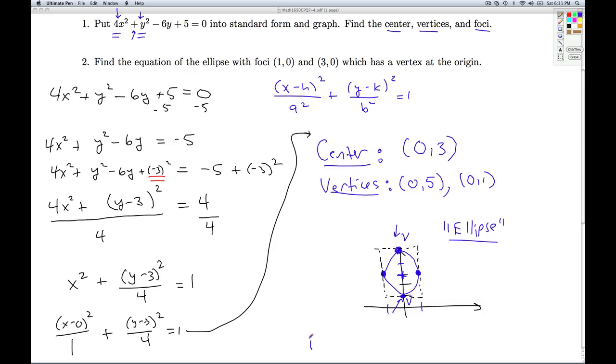What about the foci? Well, for ellipses as well as hyperbolas, the c is the key. You can't spell foci without the c. How do we get the c? c, remember, is the distance from the center to each focus. We always take the square root of the larger of these two squares minus the smaller.